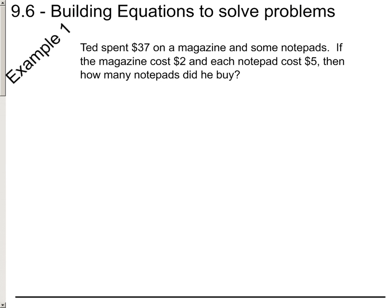Here's the first example. Ted spent $37 total on a magazine and some notepads. If the magazine cost $2 and each notepad cost $5, how many notepads did he buy? The first thing I want to point out is the question of what they want—it's going to become your variable for the problem. So if they want you to figure out how many notepads that Ted bought, we need to select a variable. In this case, I'm going to choose n to represent the number of notepads.